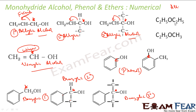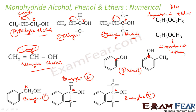For the ether examples: R-O-R where both sides are the same is symmetrical ether. Where the two sides are not the same, it is unsymmetrical ether.